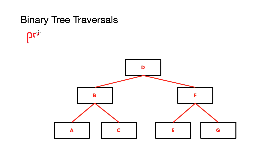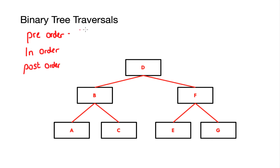Once we have our binary tree, the next thing we need to do is look at how we search through it. There are three different traversal methods: a pre-order traversal, an in-order traversal, and a post-order traversal.